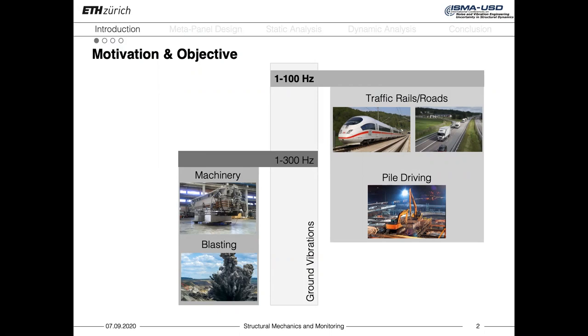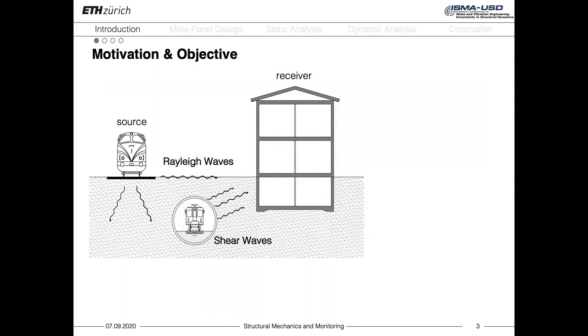Depending on the type of source taken into consideration, the frequency range of interest might vary. In our investigation, we are mainly focusing on vibrations typically generated by railway traffic, which are characterized by a frequency content ranging from 1 to 100 Hertz, and whose spectrum exhibits pronounced peaks at specific frequency components.